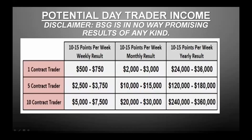However, I just wanted to show you this screen here — it's really important, showing you the number of contracts. We're just taking 10 to 15 points per week as an average — that's two to three points a day. Let's say we're trading the E-mini ES. Once you get to the level of trading 10 contracts consistently and just making 10 to 15 points per week, you're looking at over a quarter of a million dollars in potential income. And if you're just trying to trade one contract and get consistent making 10 to 15 points per week, you can see the number — $500 to $750 per week.